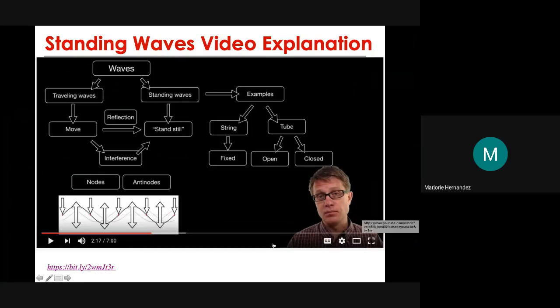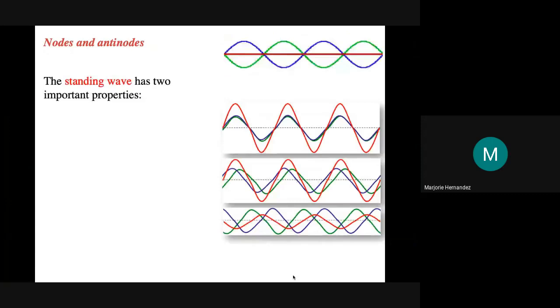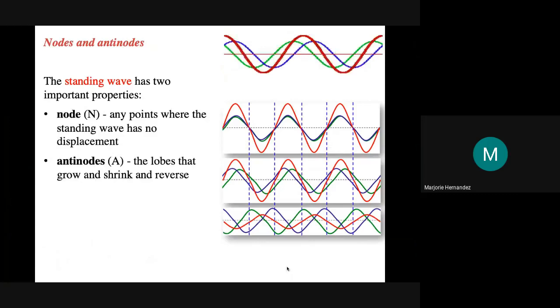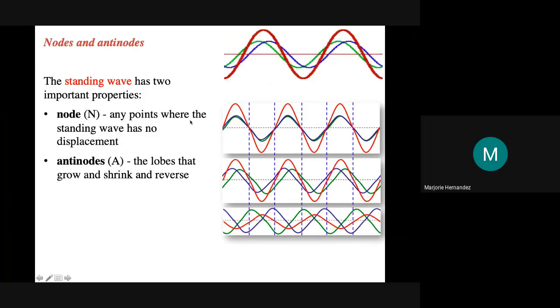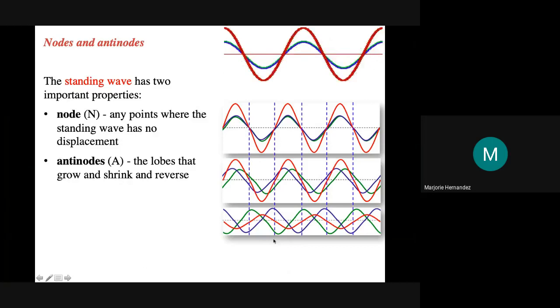Last time I assigned you a video on the basic concept of standing waves. Now I'm going to present several slides also related to standing waves. As a recall, standing waves have two important properties: the node and the antinode. The node is any point where the standing wave has no displacement, and the antinode is where you can have the maximum amplitude — the lobes that grow, shrink, and reverse.